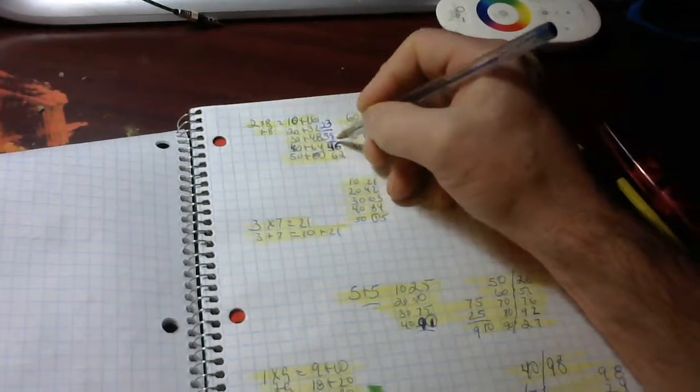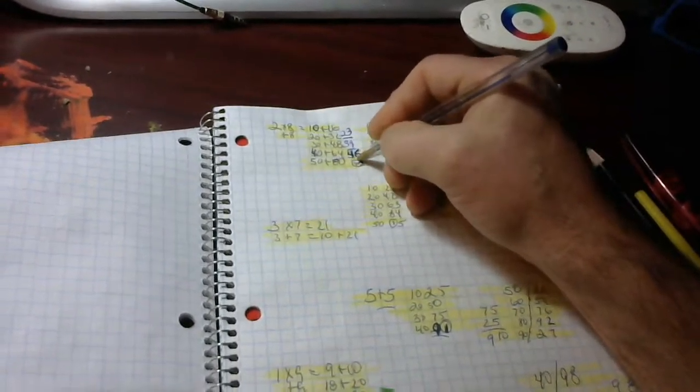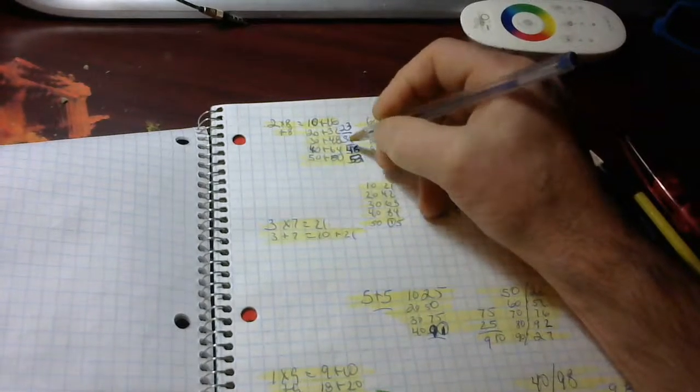This one over here, another 16 on top of this. 6 and 6 is 12. 1 and 2 is 3. And 1 equals to 53 over here, if I was adding them up.